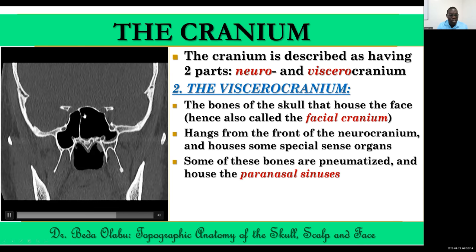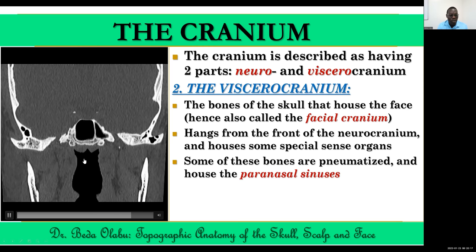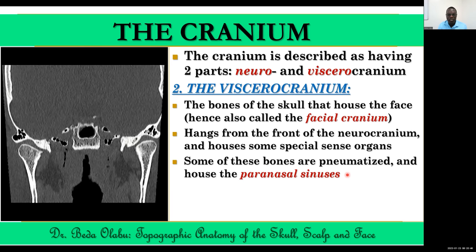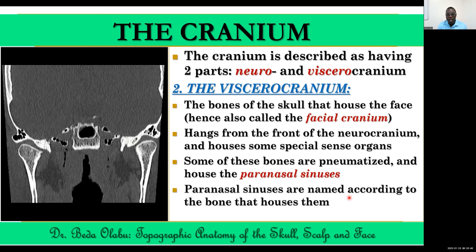In simple terms, there are four paranasal sinuses: the frontal air sinus, the maxillary air sinus — which is the largest — the ethmoidal sinuses, which are numerous, and the sphenoidal sinuses. They are named according to the bones that house each of them.